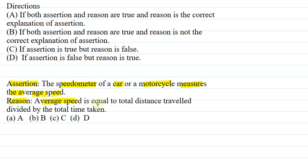Reason kya hai? Average speed is equal to total distance travelled divided by total time taken. Reason kya hai? Average speed kya hai? Total distance travelled upon total time taken hai.